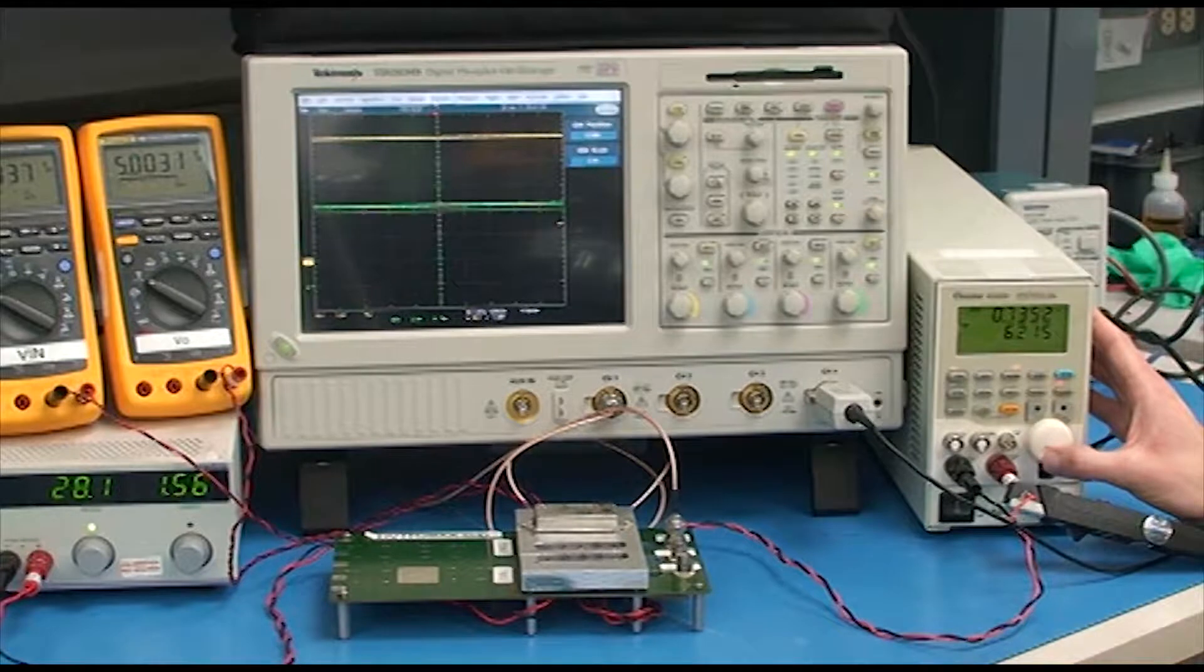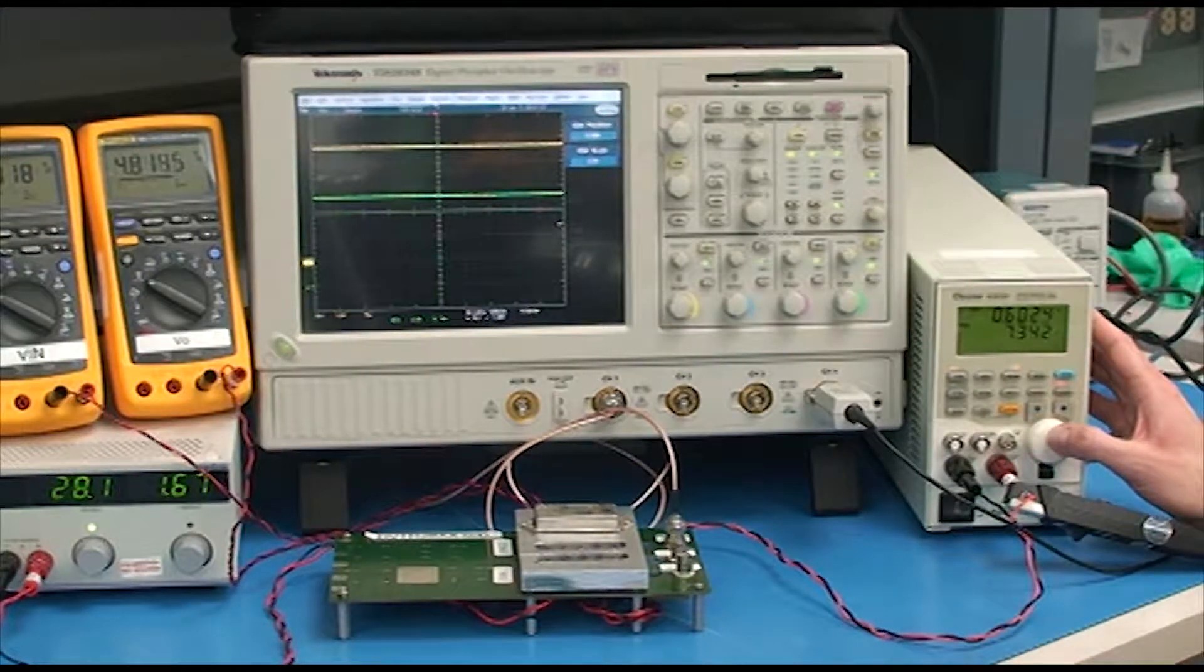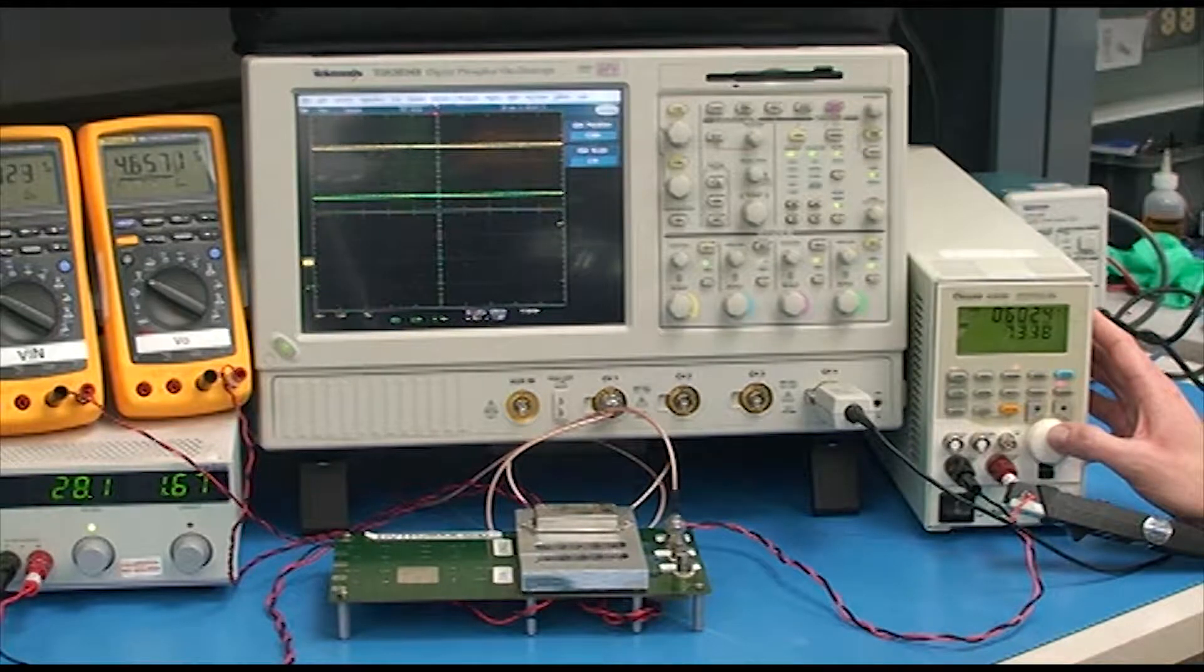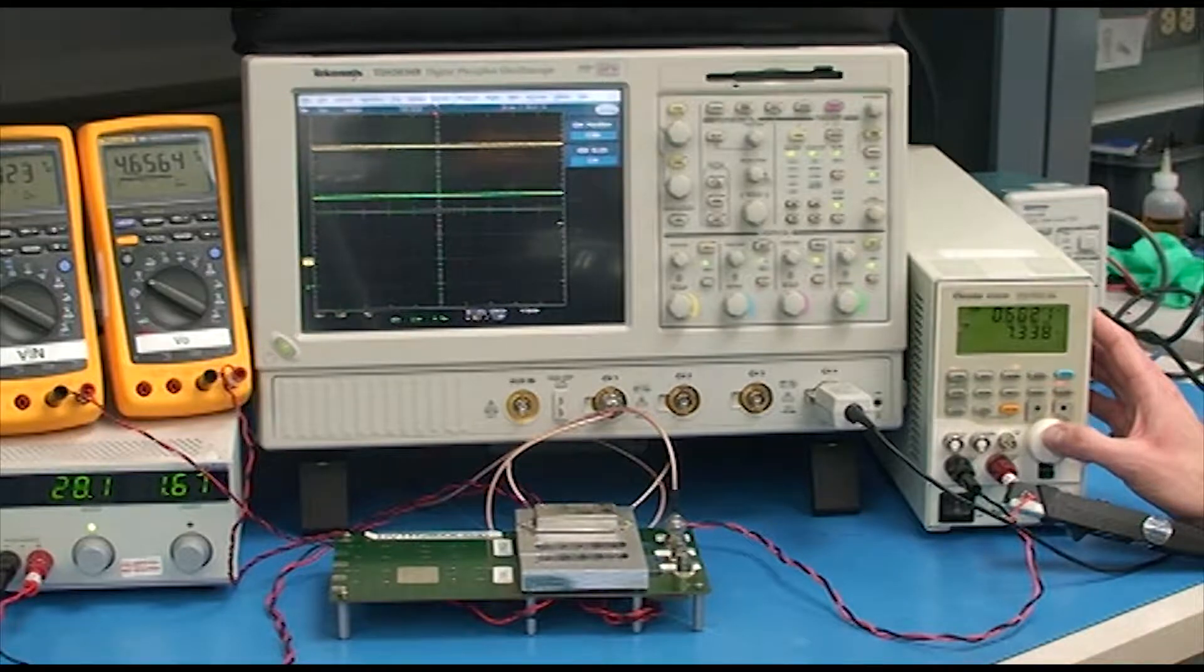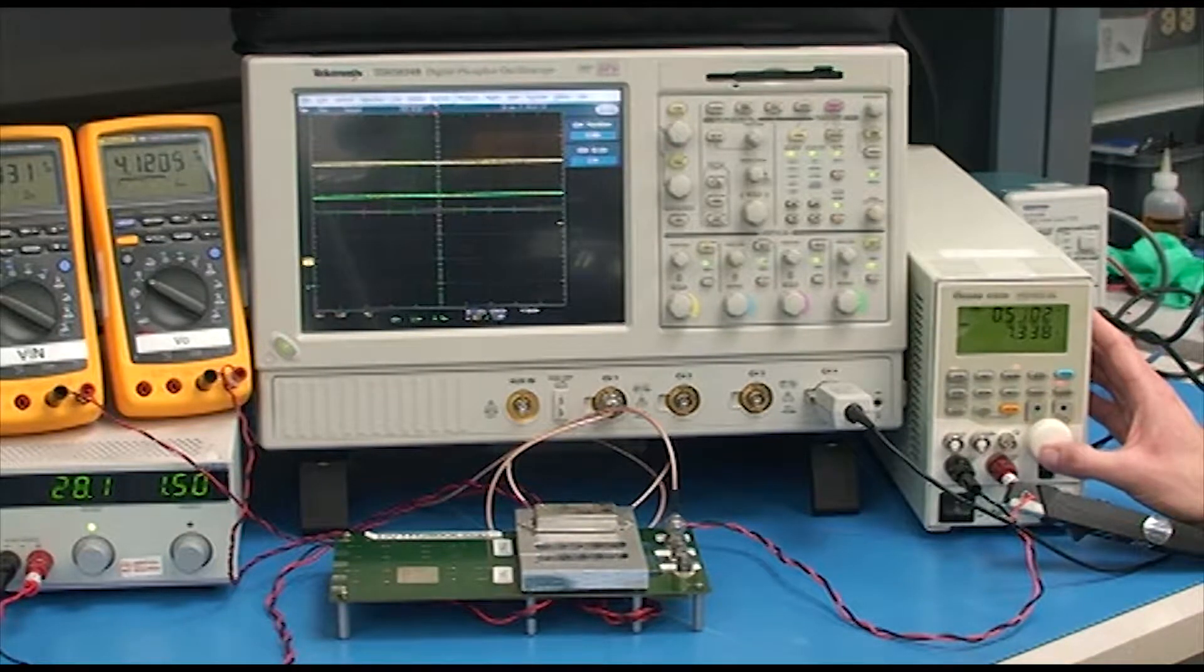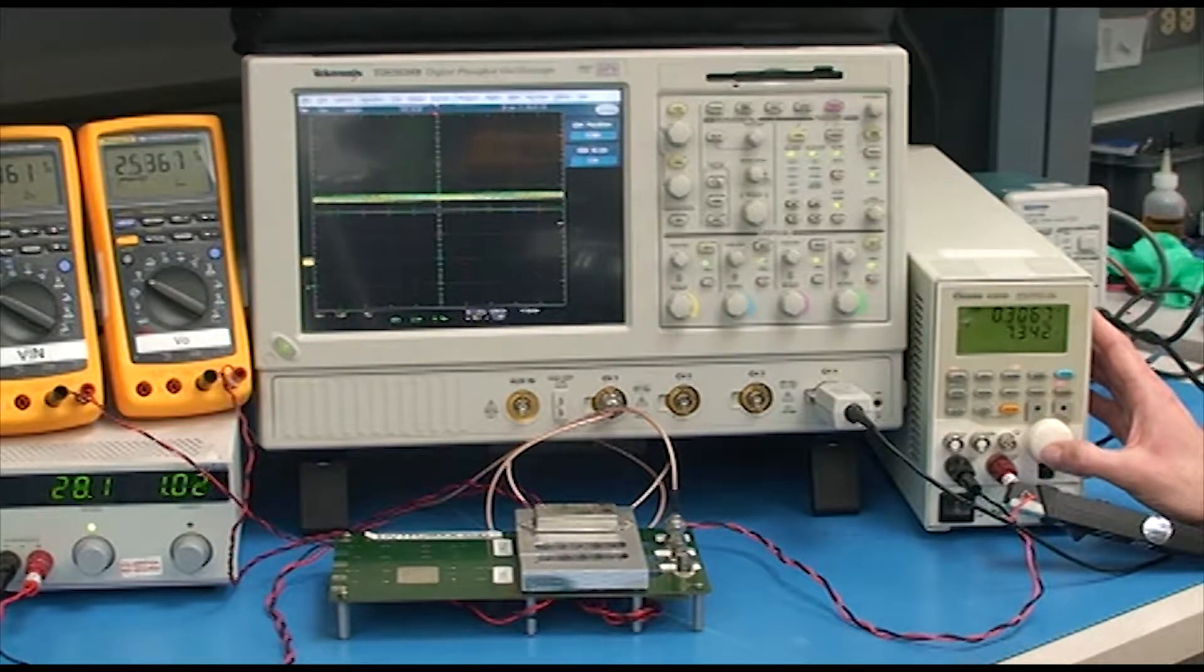As I turn up the load, you can see the output current in green increase. Then, once I reach the current limit point, the output voltage in yellow will start to decrease as the output current stays the same. This can go all the way down until you essentially reach a short circuit.